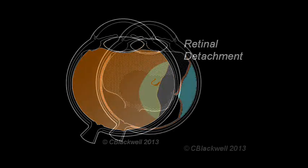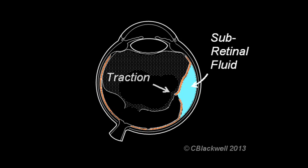With the detachment, there are two principal issues that have to be dealt with. One is the fluid that is accumulated under the retina, which is separating the photoreceptors from the pigment cells underneath. And two is the pulling of the vitreous on the retinal tear. Usually, the traction has to be relieved, or the repair will not be successful.